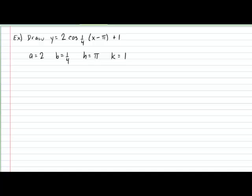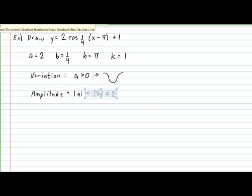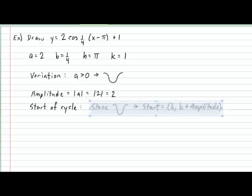The first clue to obtain is the variation of the graph. The variation in the cosine function is given by the sign of the variable A. In this example, A is positive, which means the cycle will be in the shape of a dip. The next clue is the amplitude, given by the absolute value of A, which corresponds to 2. With the variation and amplitude together, we can figure out the start of the cycle. Since the cycle is a dip, the start occurs at H and K plus the amplitude — in our example, that produces a start point at π and 3.